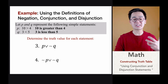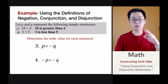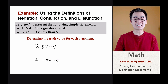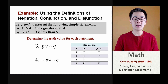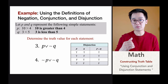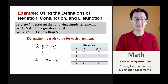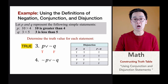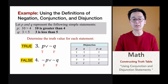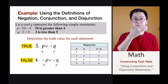Now let's say we have two more statements with p and q being the same values as the previous example. If we're going to determine the truth value for problem 3, which is p or not q, we're going to use the disjunction table. So p is true, not q is false, and T or F is going to be true, because the only time a disjunction is false is when both statements are false. For number 4, not p is F and not q is also F, so that statement is going to be false.